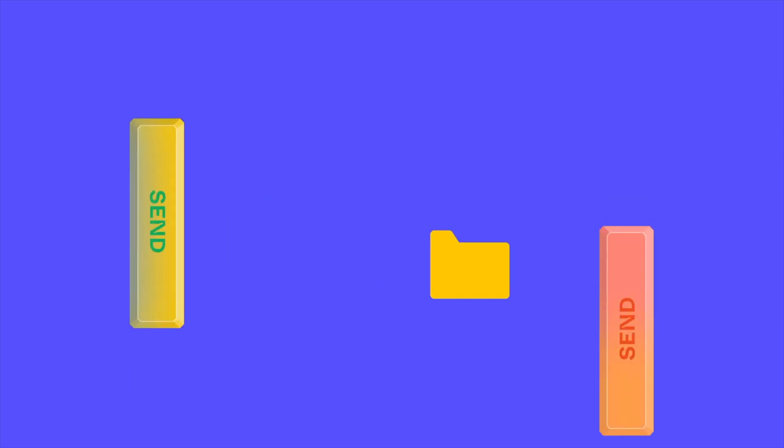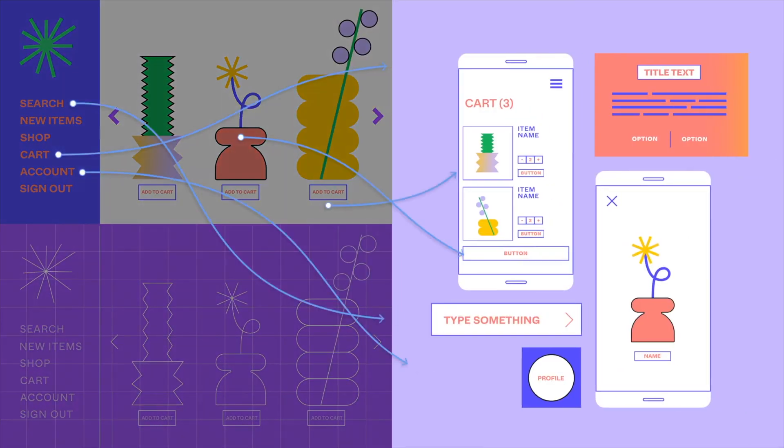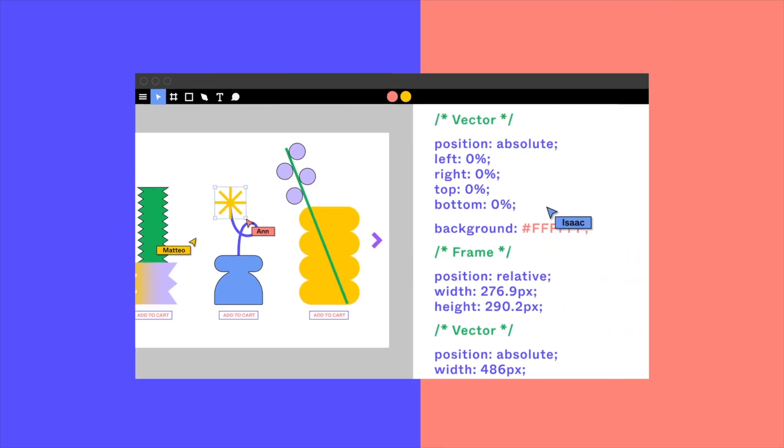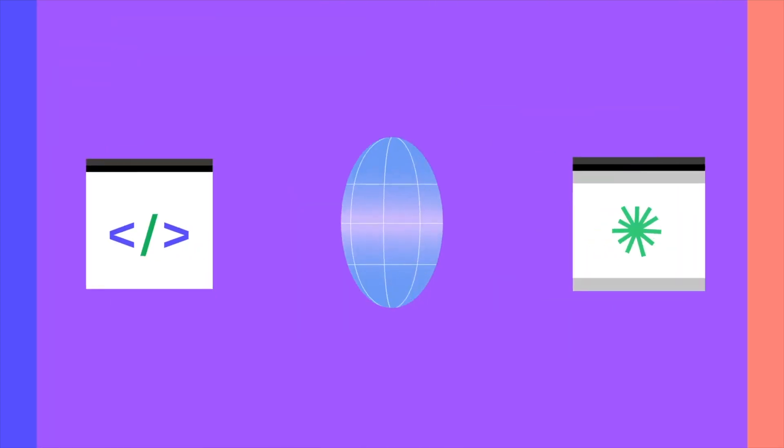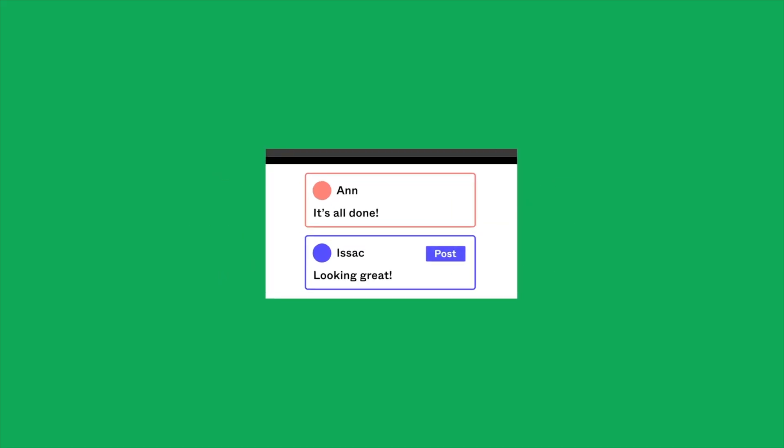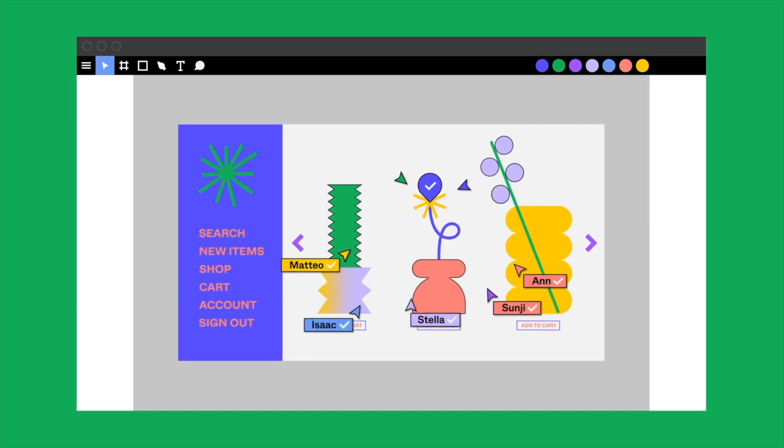The next tool is for when you are building your application and need your designs. Figma is the best tool to create your designs. There are a bunch of different AI plugins available which will help you create your application design very fast. There are also ready-made designs available free of cost. It is very easy to learn and it is a free tool that will help you design faster.